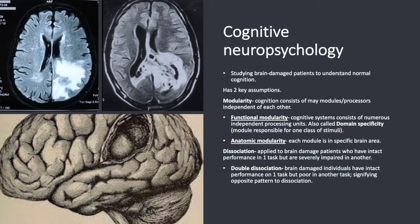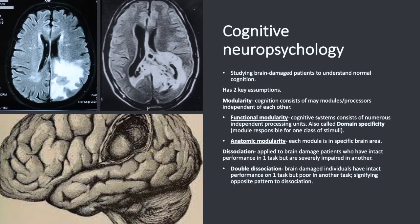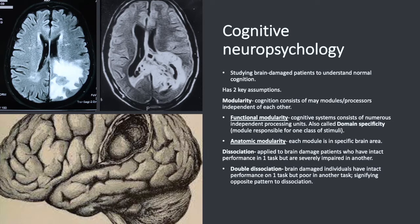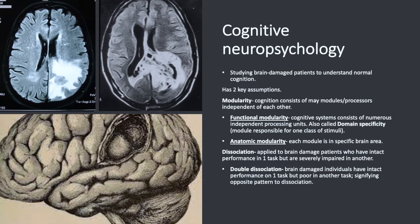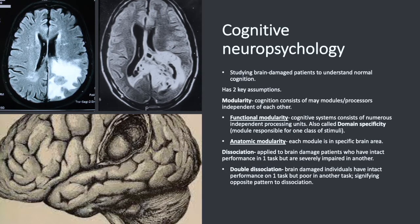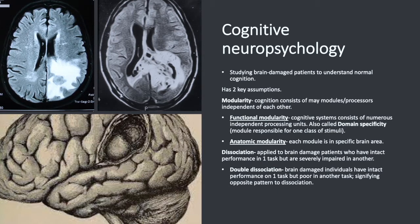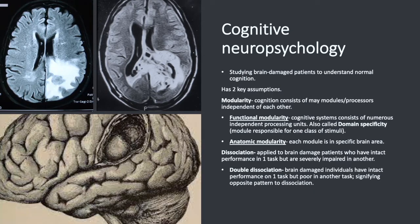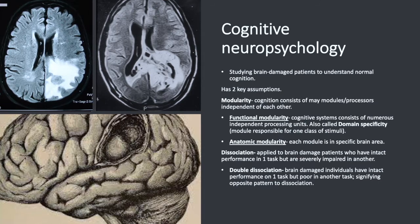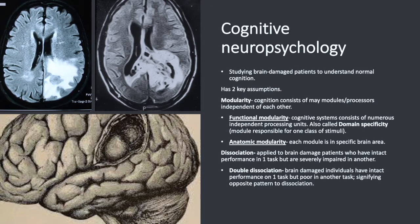Cognitive neuropsychology has two key assumptions. The first is modularity, which is when cognition consists of many modules or processes independent of each other. Two examples are functional modularity and anatomical modularity. Functional modularity is when cognitive systems consist of numerous independent processing units with domain specificity — meaning modules are responsible for interpreting one class of stimuli. Anatomical modularity is when each module is located in specific brain areas.